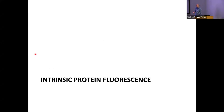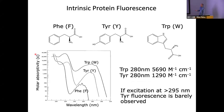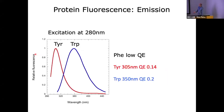Let's have a look at intrinsic protein fluorescence. These are obviously the aromatic amino acids. One trick to note is that if you want to just excite the tryptophans, if you excite at 295 nm then you'll hardly see any tyrosine fluorescence. Phenylalanine, with its benzene ring system, doesn't tend to be used for fluorescence because you need very high excitation and it has low quantum yields.